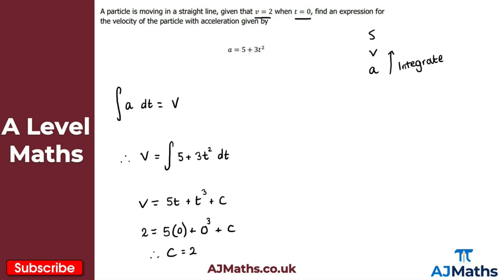All I need to do now is replace c with the value we found. So therefore the velocity of the particle with this given acceleration is equal to 5t plus t cubed plus 2 — remember c equals 2, so plus 2. And that's our velocity of the particle with this given acceleration. That brings us to the end of this video on using integration. In the next video we're going to take a look at exam revision for variable acceleration.